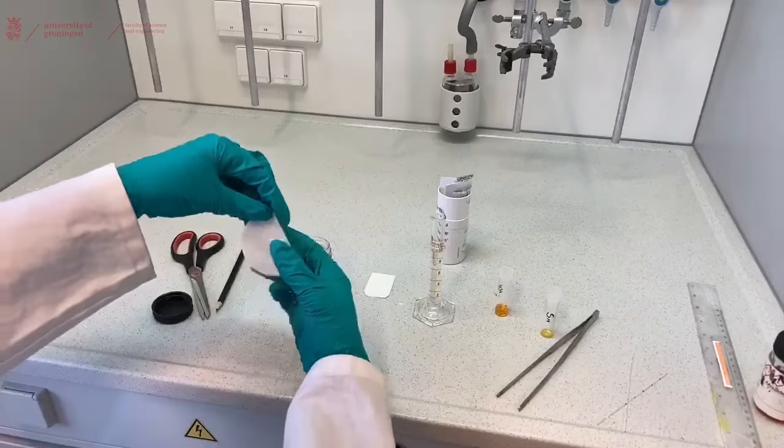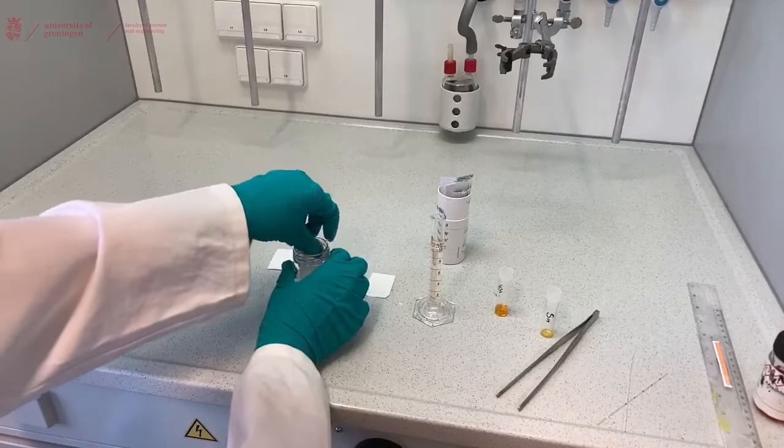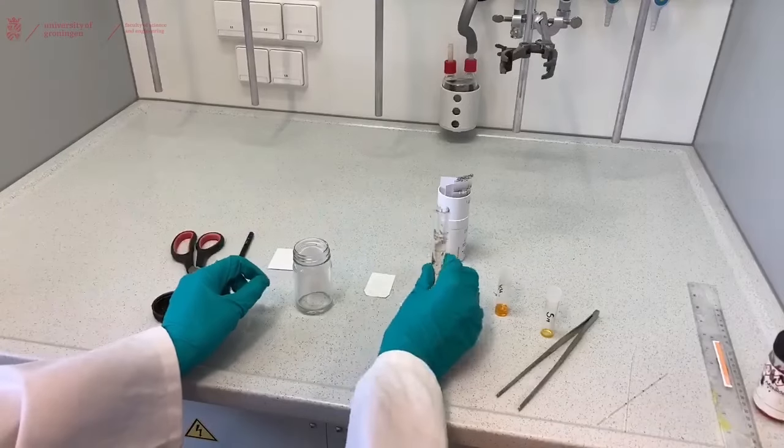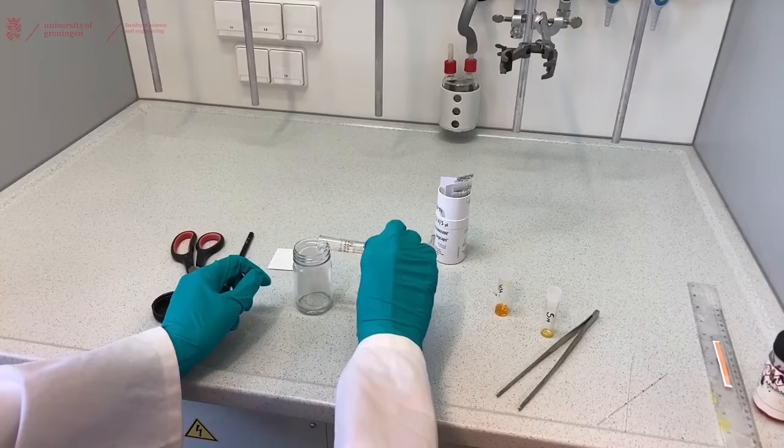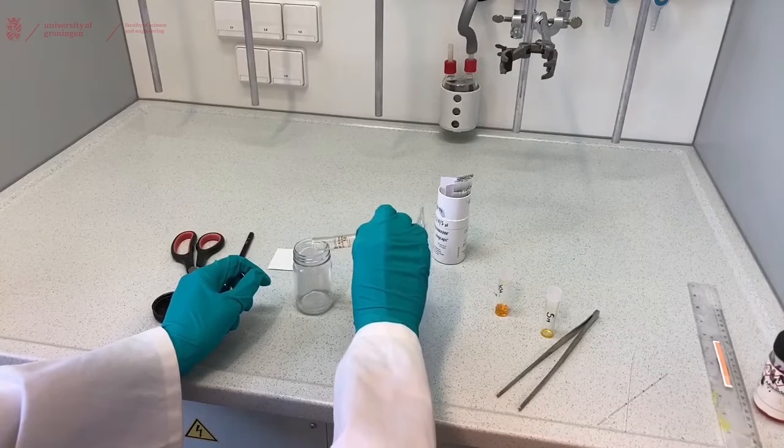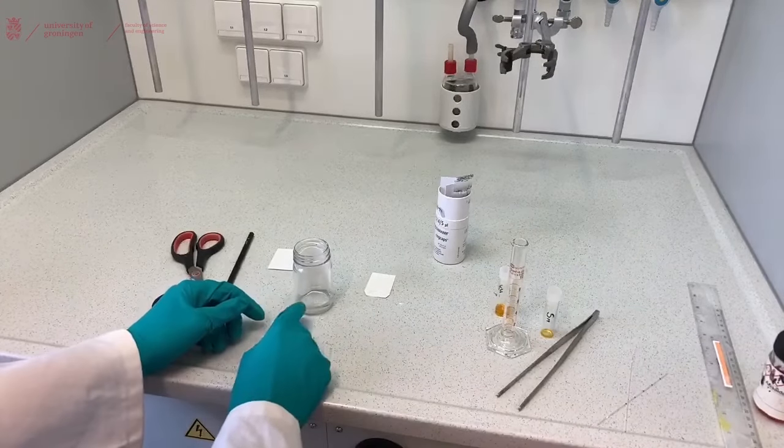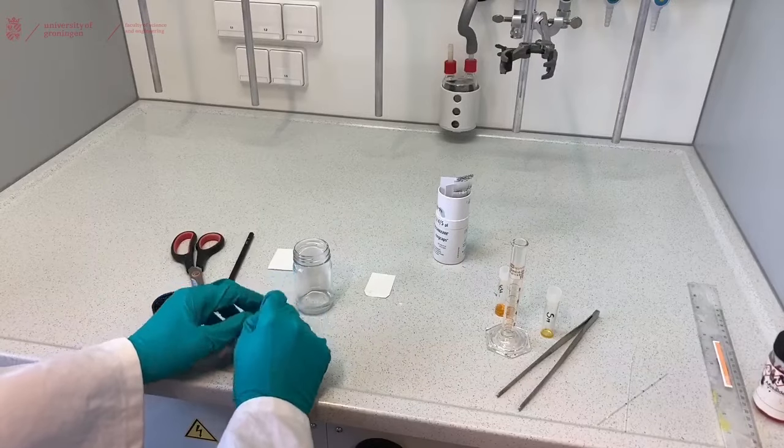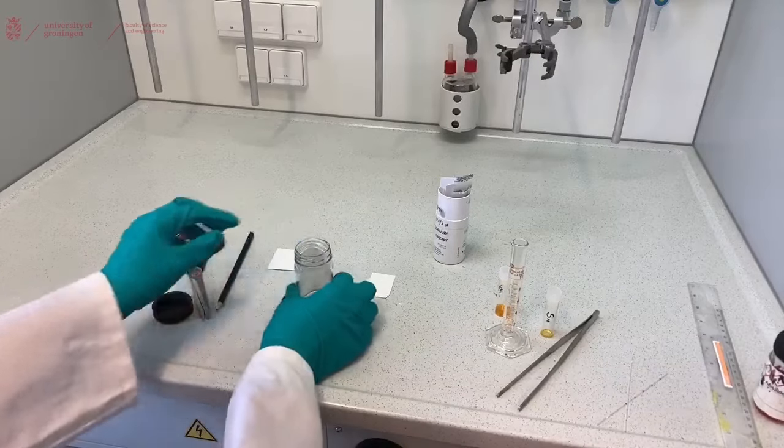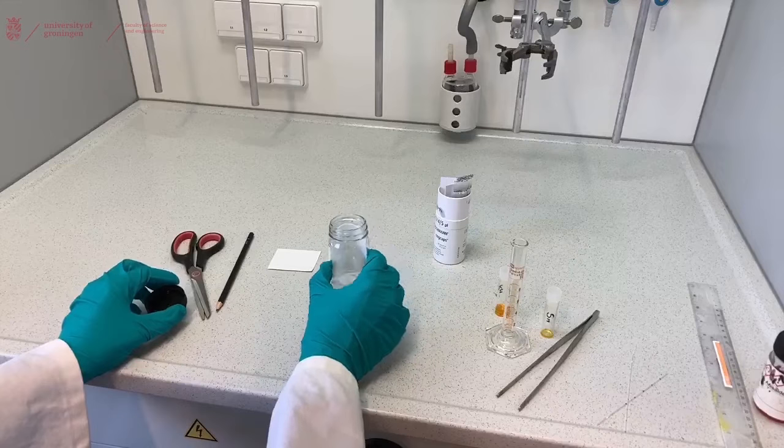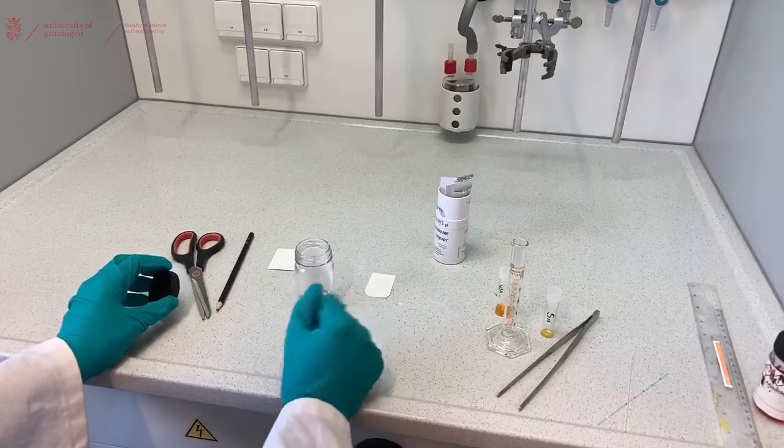Place the filter paper in your jar and pour in the solvent. The filter paper will pull the liquid up into the jar and then fill the whole jar with the vapors of the solvent, making sure you get a nicer separation.